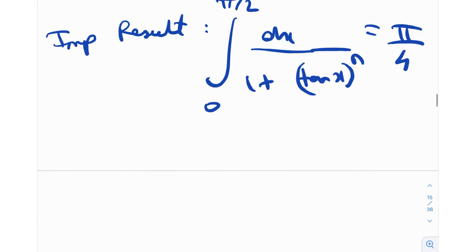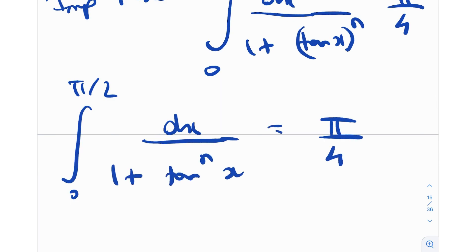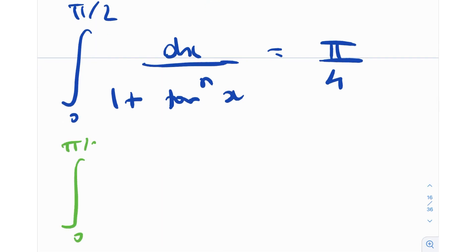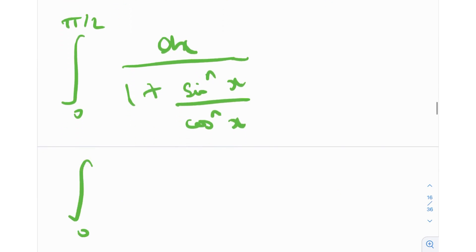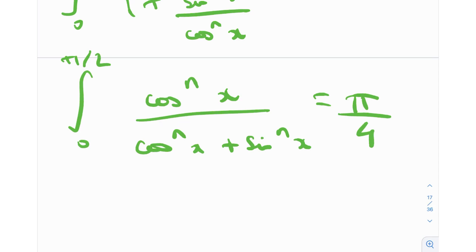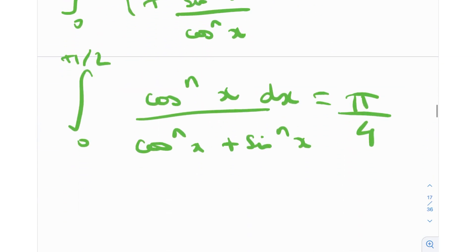So that was approach number one using king's property. Now let's discuss method two, which relies on the change of limits, or splitting of limits. This property says that the integral from a to b of f(x) dx can be split into two parts by introducing a new limit c: from a to c, plus from c to b. Think of integration as summation of areas — that's why splitting works. The lower limit of the second integral must match the new point c, and its upper limit must be the original upper limit b.